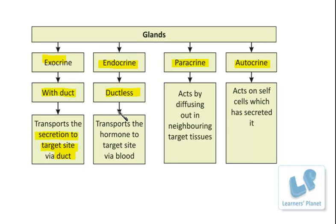Since endocrine secretions are not transported through a duct, does that mean they function only nearby? No — they are transported to long-distance sites. The target site is located in far regions of the body, and so transport occurs through the blood. The secretion from endocrine glands is transported to the target site through the blood. These secretions are known as hormones — chemical messengers that control different body functions, secreted at one site and always having the target site at some other point.